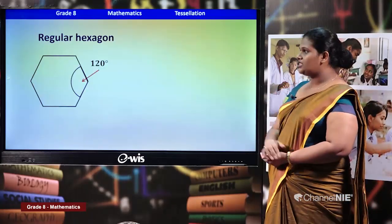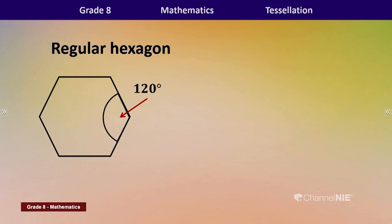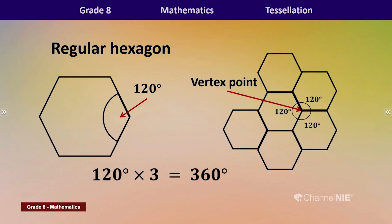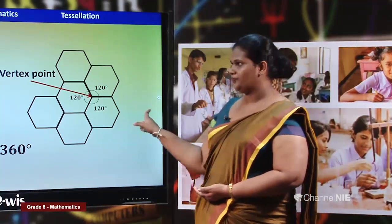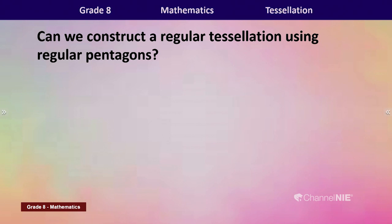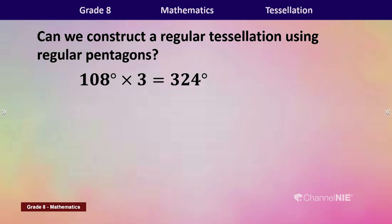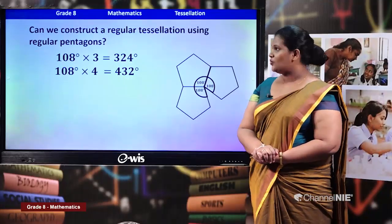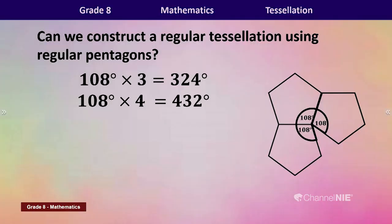The third is regular hexagon — the interior angle is 120 degrees, and 120 × 3 = 360 degrees, so we can create a regular tessellation using regular hexagons. Now can we construct a regular tessellation using regular pentagons? The interior angle of a regular pentagon is 108 degrees. 108 × 3 = 324 degrees, which is less than 360. 108 × 4 = 432 degrees, which is greater than 360. So we cannot make a regular tessellation using a regular pentagon.